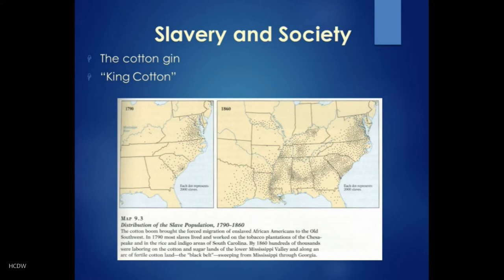Up to that point, southern planters had had some success growing long staple cotton, which grew only in the coastal areas. Now short staple cotton grew across virtually the entire South but was difficult to harvest because it had lots of sticky seeds that made it hard to clean. The cotton gin pulled the seeds out of short staple cotton and made it very efficient to grow as a crop. Almost immediately, planters across the South switched to growing short staple cotton and the boom in cotton led many farmers to migrate from the East to the West.